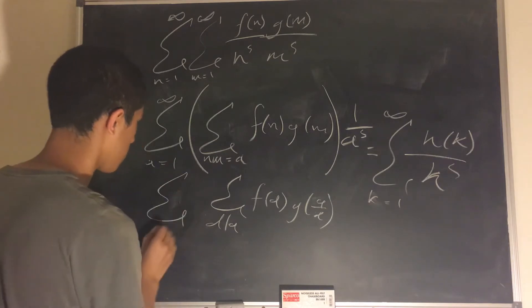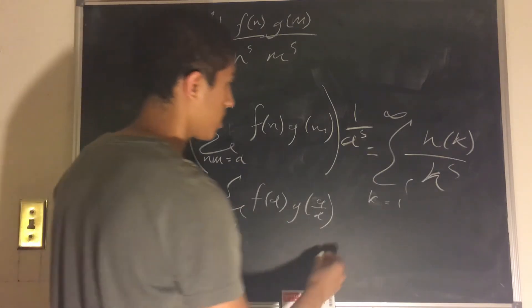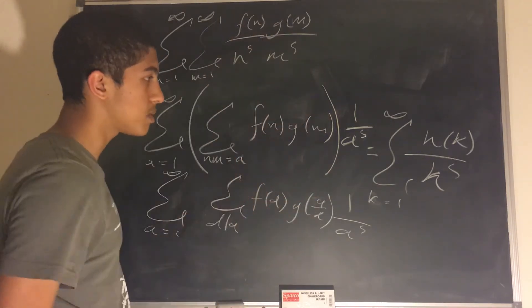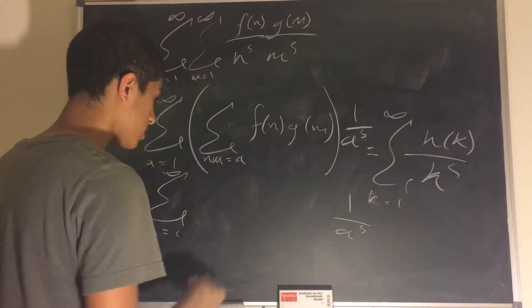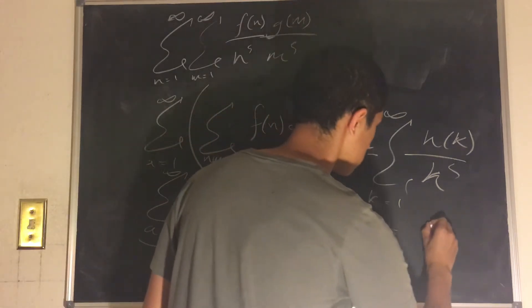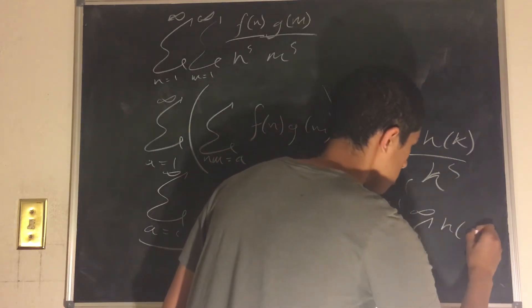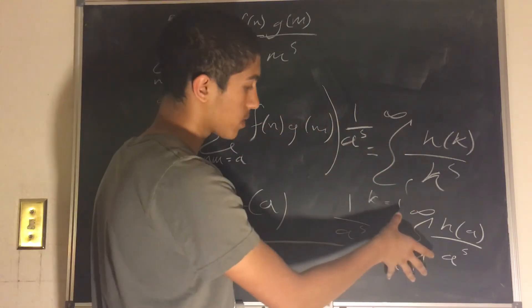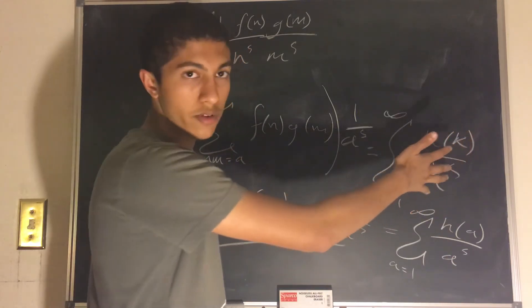So then we get sigma over a equals 1 to infinity of this Dirichlet convolution of f and g times 1 over a to the power of s. And what is this Dirichlet convolution of f and g? We define that to be h. So the function that will be replacing this is just h of a. So when we combine all of this, then we get this is equal to the sum over a is equal to 1 to infinity of h of a over a to the power of s. And this is precisely what we desired as the final result.